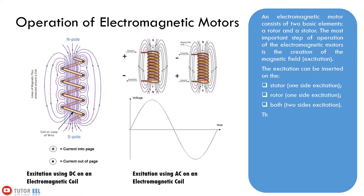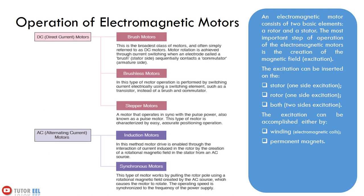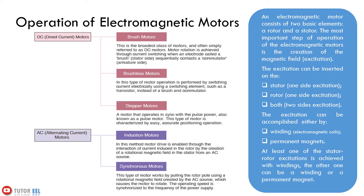The excitation can be accomplished either by winding or permanent magnets. The excitation must be varied relative to the stator or to the rotor. This can be achieved only if an external power source, either AC or DC, is used for the excitation of the windings. Thus, always at least one of the stator or rotor excitations is achieved with windings; the other can be a winding or a permanent magnet. Based on the external power source used for excitation, electromagnetic motors can be classified into AC motors and DC motors.